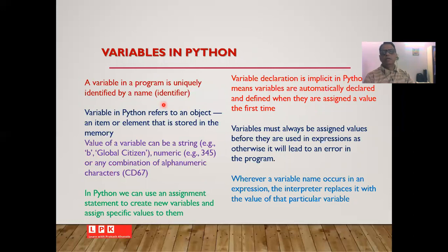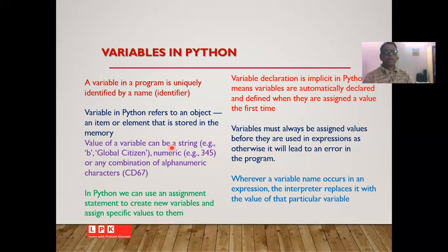A variable in a program is uniquely identified by name. In Python, a variable actually refers to an object — an object is an item or element stored in a certain memory location. The value of a variable can be any of the data types available in Python, such as a string enclosed in single or double quotes, a numeric value, or any combination of alphanumeric characters.